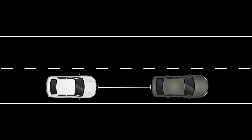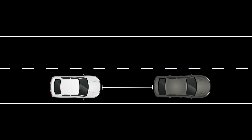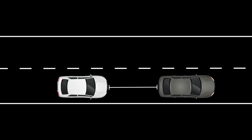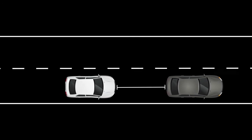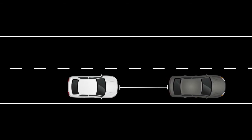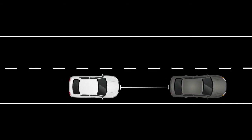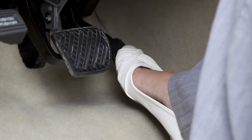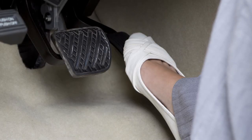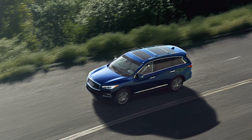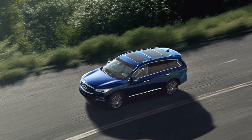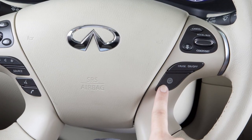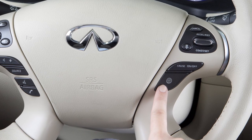The Distance Control Assist system is designed to assist the driver to keep a following distance from the vehicle ahead, traveling in the same lane and direction. The DCA system brakes and moves the accelerator pedal upward according to the distance from and the relative speed of the vehicle ahead. With the Distance Control Assist enabled in the settings menu,